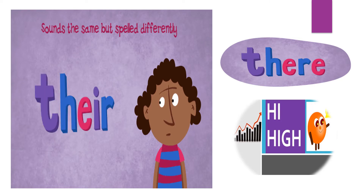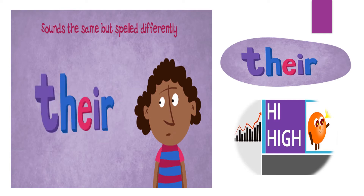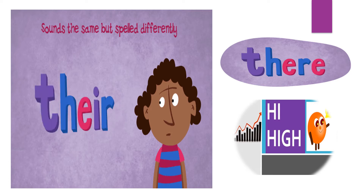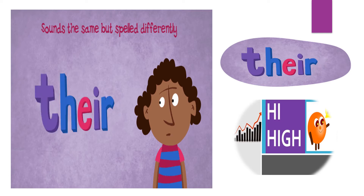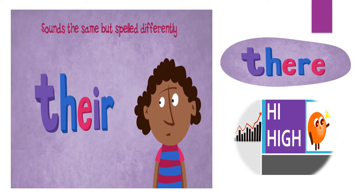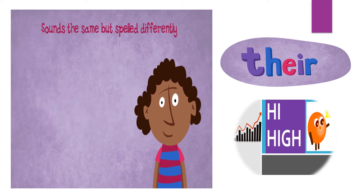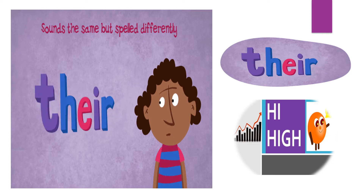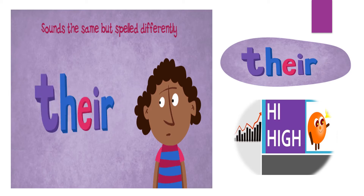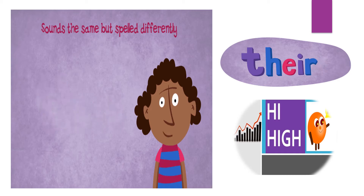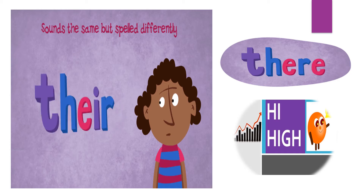Let's check a few more words which sound the same but are spelled differently. Their, T-H-E-I-R, means unka. Another word, There, T-H-E-R-E, means wahan. In the same way, Hi, H-I, means hello. And High, H-I-G-H, means ooncha — for example, 'The place is very high.' So we see that their spellings are different but they sound the same.